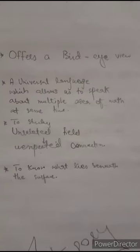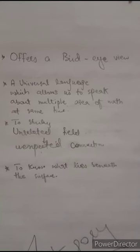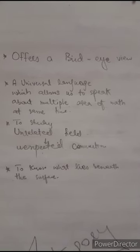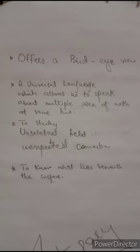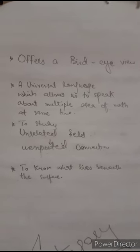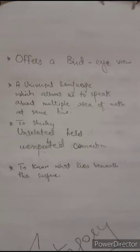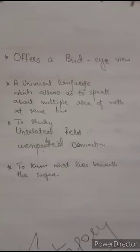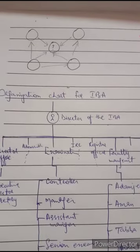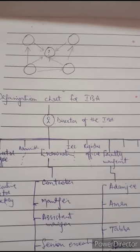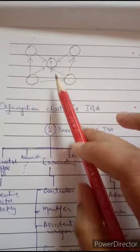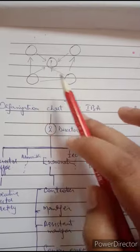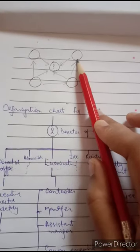Category theory also helps us know what lies beneath the surface. That means we don't need to know what is inside an object. Once we categorize, we don't need to look inside the object, because if we know each other's properties, we can understand each other's properties from the outside.